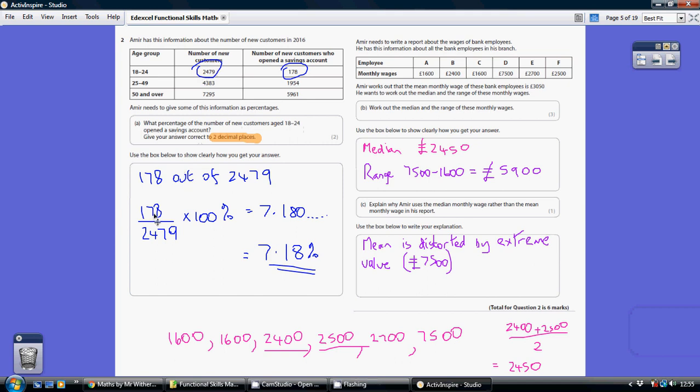So to represent this as a percentage, we do 178 divided by 2,479. That gives us a decimal number, so we need to multiply that by 100 to turn it into a percentage.